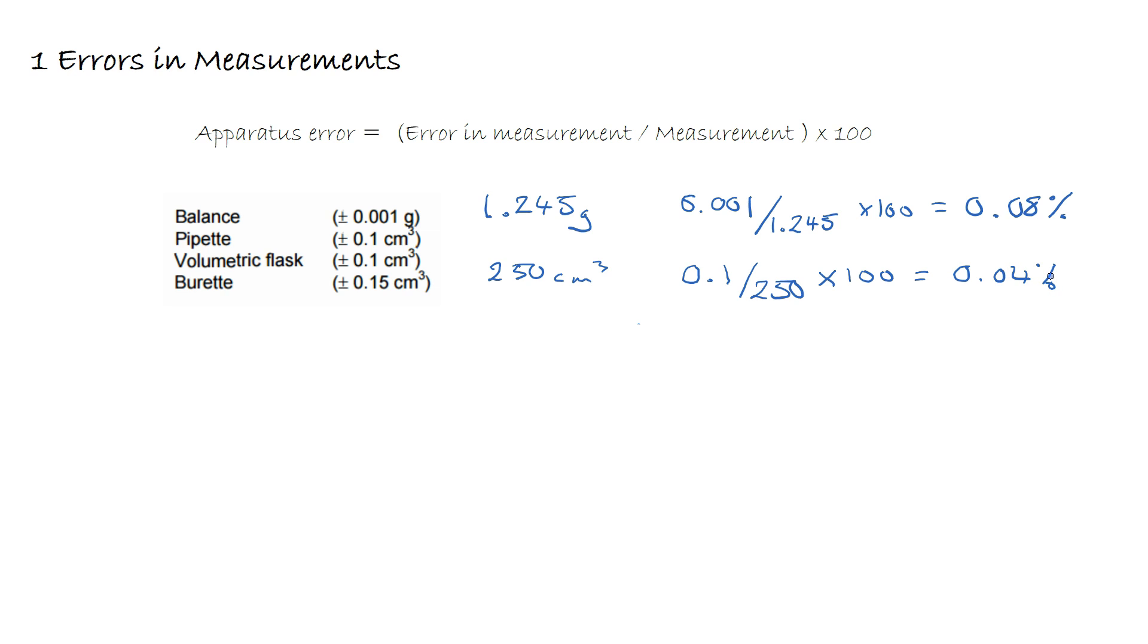If that solution is pipetted, imagine 25 cm³ into a conical flask, our error would be 0.1 over 25 times by 100, giving us a total percentage error of 0.40%.